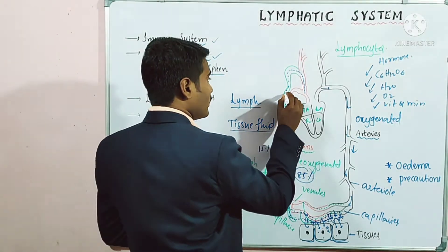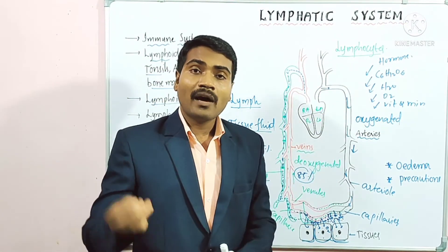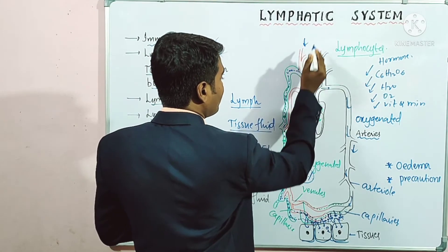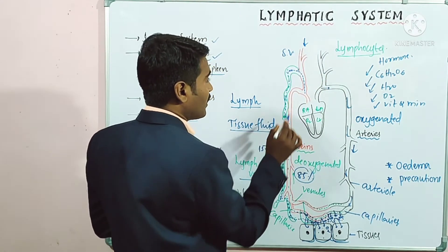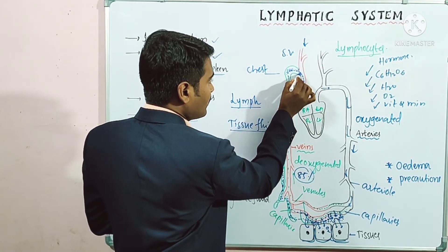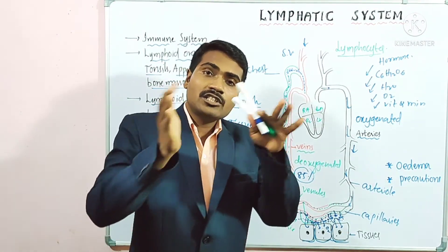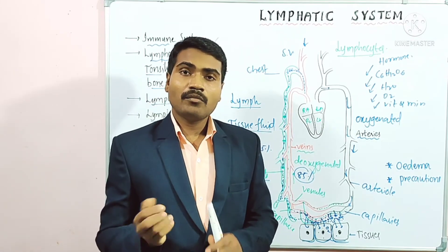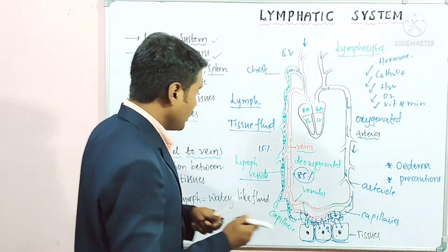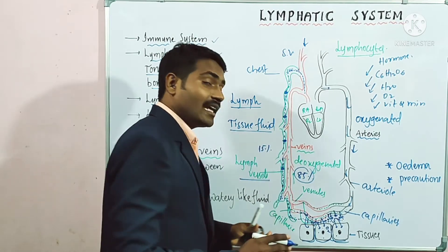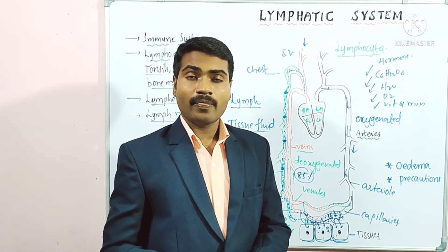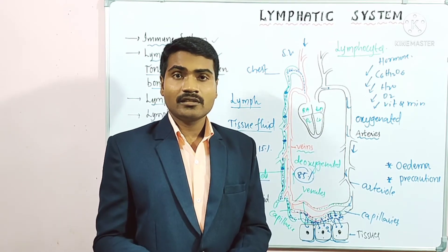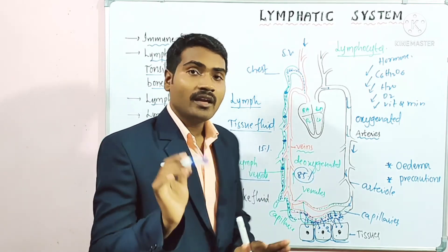The lymph vessels collect this tissue fluid and the lymphocytes, then deliver it back to the venous system at the chest region — into the superior vena cava. The tissue fluid is released into the main circulatory system again. This is one function of the lymphatic system. Lymphocytes also get mature and develop here, and they produce antibodies, which is why it is called the immune system.